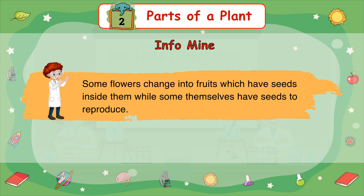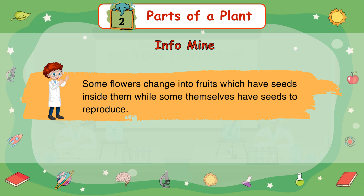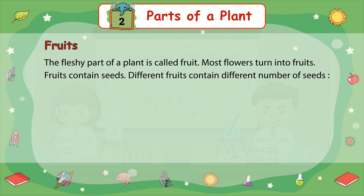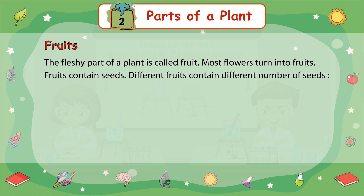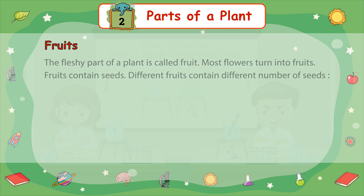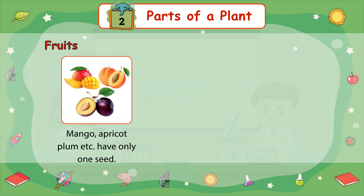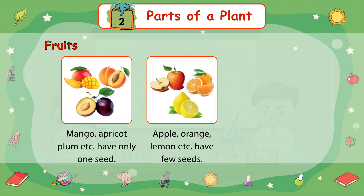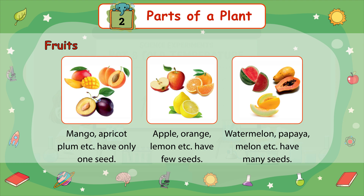Some flowers change into fruits which have seeds inside them, while some themselves have seeds to reproduce. The fleshy part of a plant is called fruit. Most flowers turn into fruits. Fruits contain seeds, and different fruits contain different numbers of seeds. Mango, apricot, plum, etc. have only one seed. Apple, orange, lemon, etc. have few seeds. Watermelon, papaya, melon, etc. have many seeds.